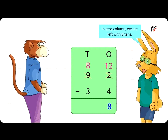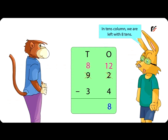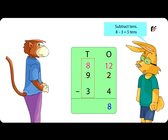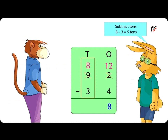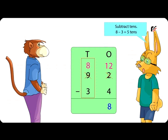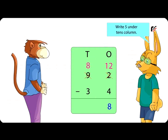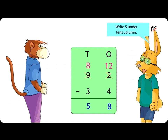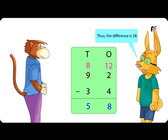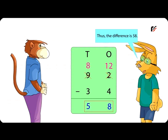In the tens column, we are left with eight tens. Subtract tens: eight minus three is equal to five tens. Write five under the tens column. Thus, the difference is 58.